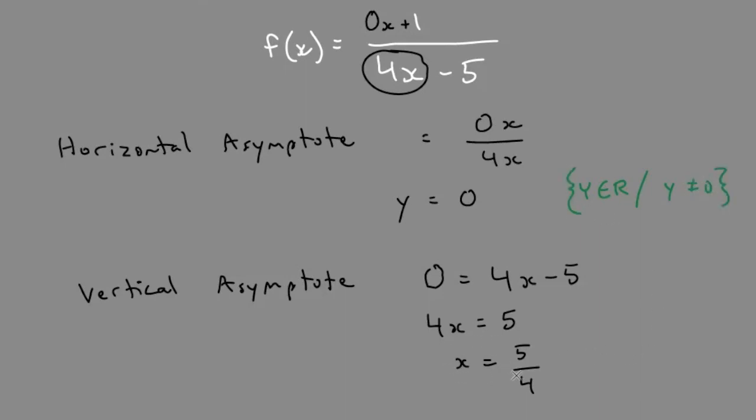And the domain, based on where x cannot exist, can exist pretty much everywhere. x is an element of all real numbers, except x cannot exist at 5 over 4. That's what an asymptote is.